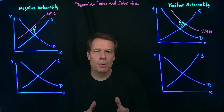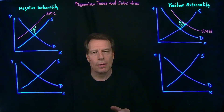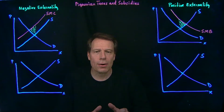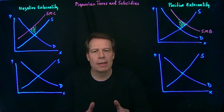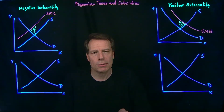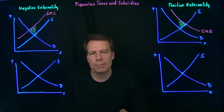Now, we know from our treatment of taxes and subsidies that when we impose taxes and subsidies, we change the quantity that's produced in the market. And that insight caused an economist named Pigou to think about using taxes and subsidies in markets with externalities to eliminate deadweight losses. Those taxes and subsidies are called Pigouvian taxes and subsidies.